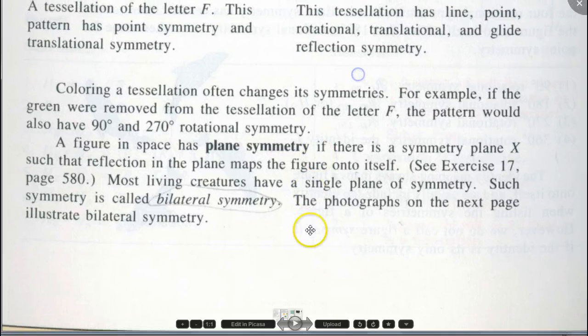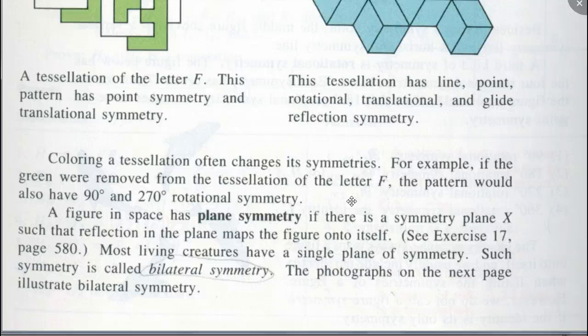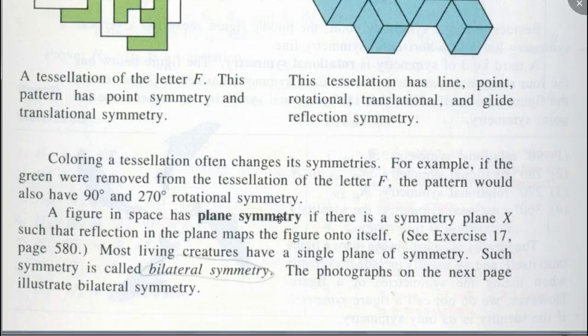A figure in space has plane symmetry if there is a symmetry plane such that reflection in that plane maps the figure onto itself. Most living creatures have a single plane of symmetry — such symmetry is called bilateral symmetry. Photographs on the next page illustrate bilateral symmetry. So as we talk about plane symmetry, we're now going into three-dimensional space. Up to here we were talking about two-dimensional symmetry.